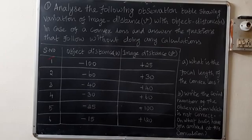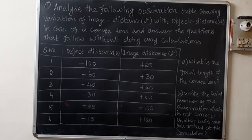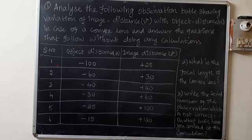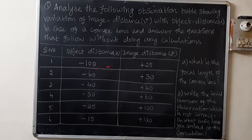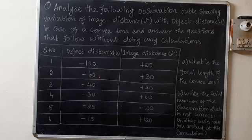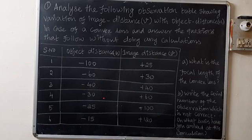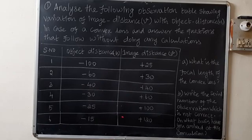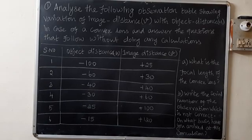In that problem, they will provide this table. Serial number, object distance, image distance. They are given six different readings. The first one is minus 100 plus 25, minus 60 plus 30, minus 40 plus 40, minus 30 plus 60, minus 25 plus 100, minus 15 plus 180. So these are the set of values they have given in that table column.